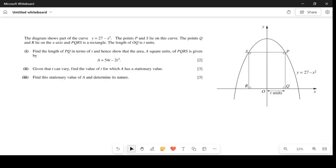The diagram shows part of a curve y equals 27 minus x squared. The points P and S lie on the curve, the points Q and R lie on the x-axis. PQRS is a rectangle. The length of OQ is t units. Find the length of PQ in terms of t.